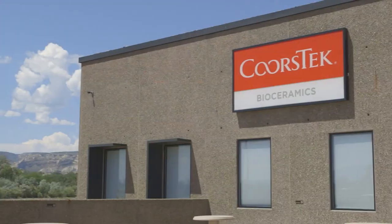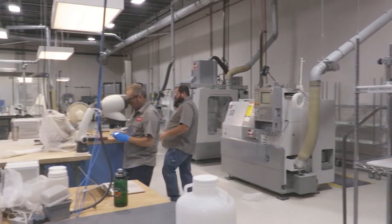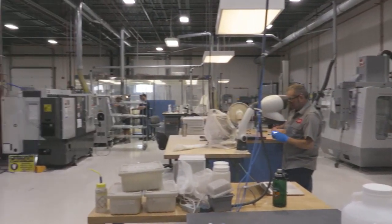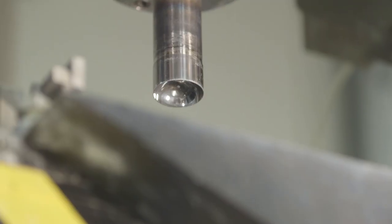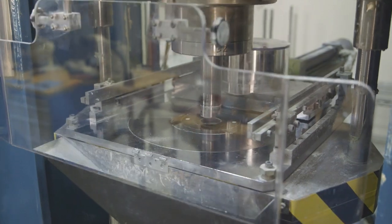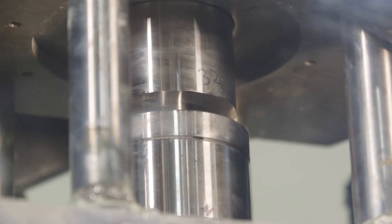At the CoorsTek Bioceramics Facility in Grand Junction, Colorado, USA, the ceramic femoral head begins to take form as the engineered powder is pressed into shape by a dry press. The powder is loaded into the base of the press, properly measured for each part, and pressed into shape with two large pistons.